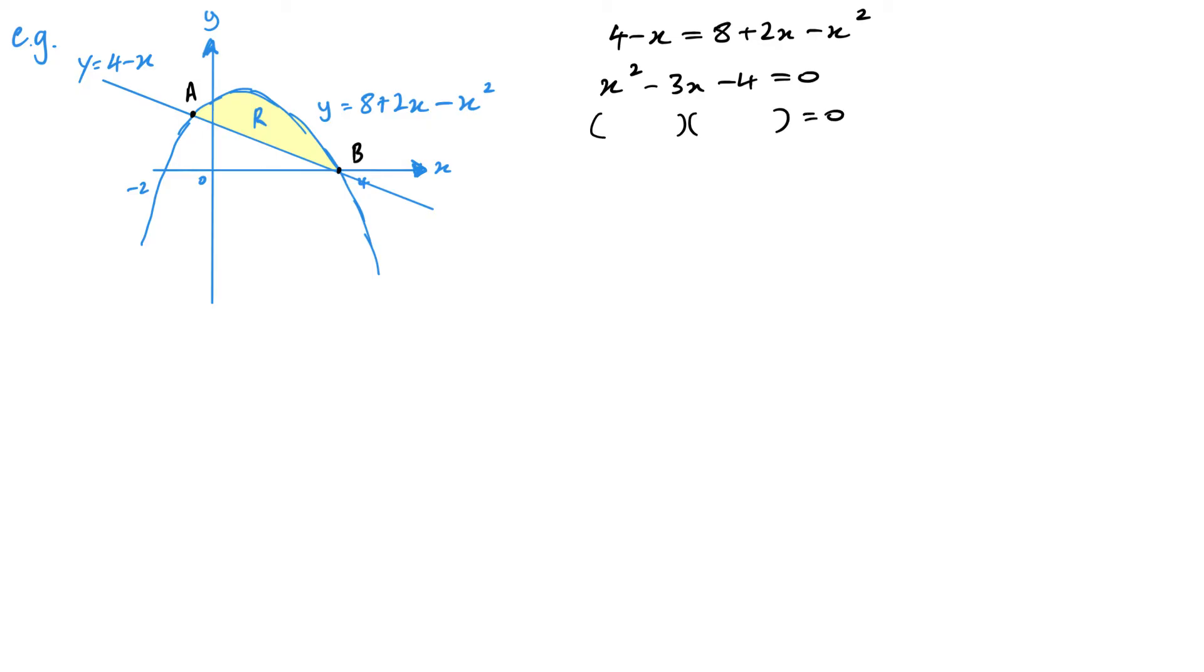Now, first step is to see if I can factorise it. So we've got x minus 4 and then x plus 1. Quick check: x squared, 1x take away 4x is that negative 3x and minus 4 times 1 is minus 4. So we're good. So we've got x equals 4, x equals negative 1.